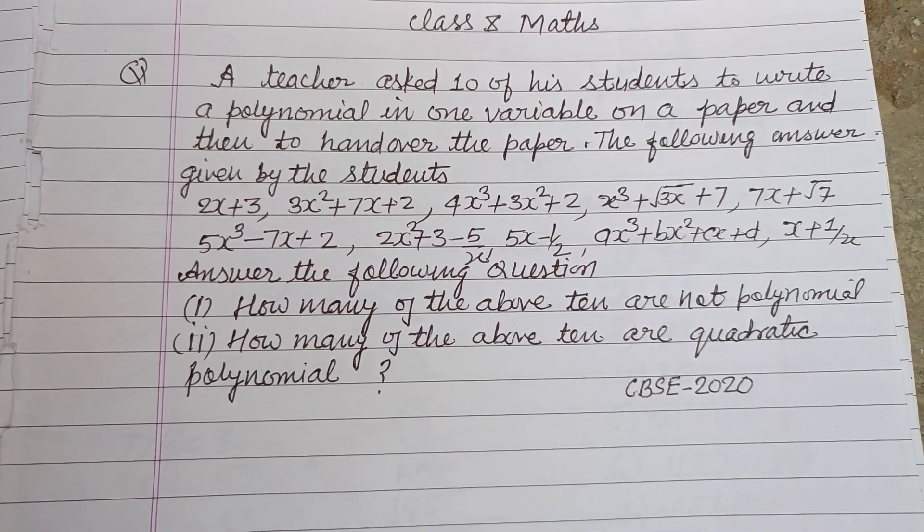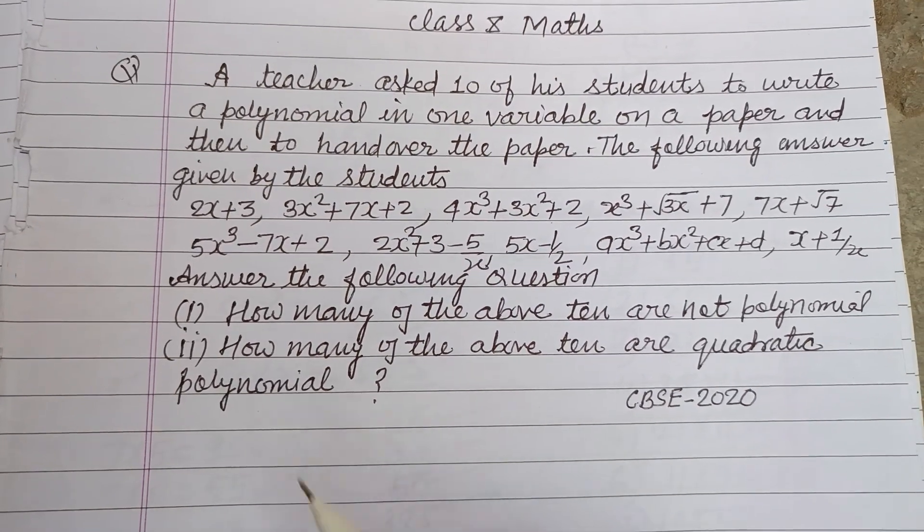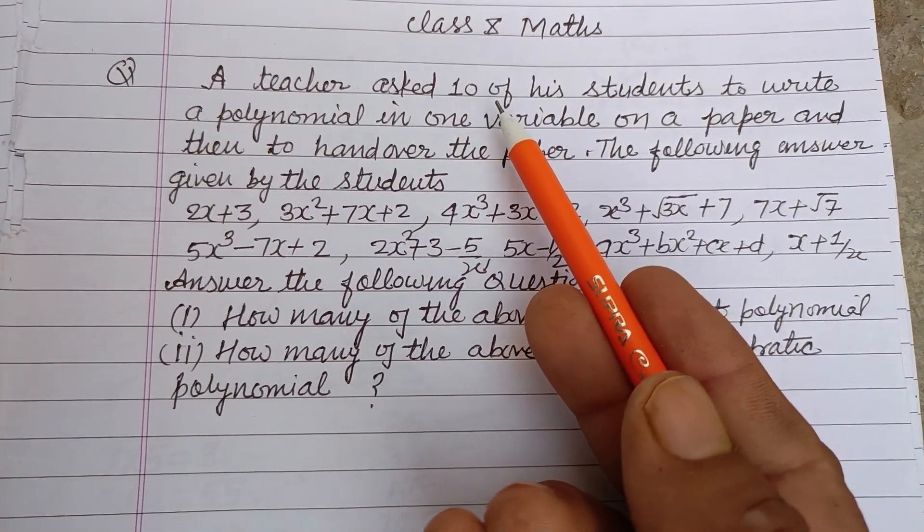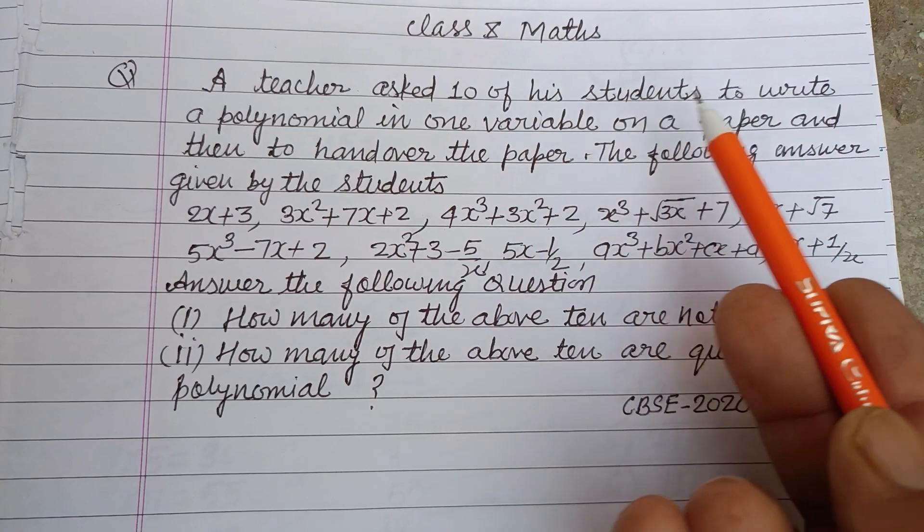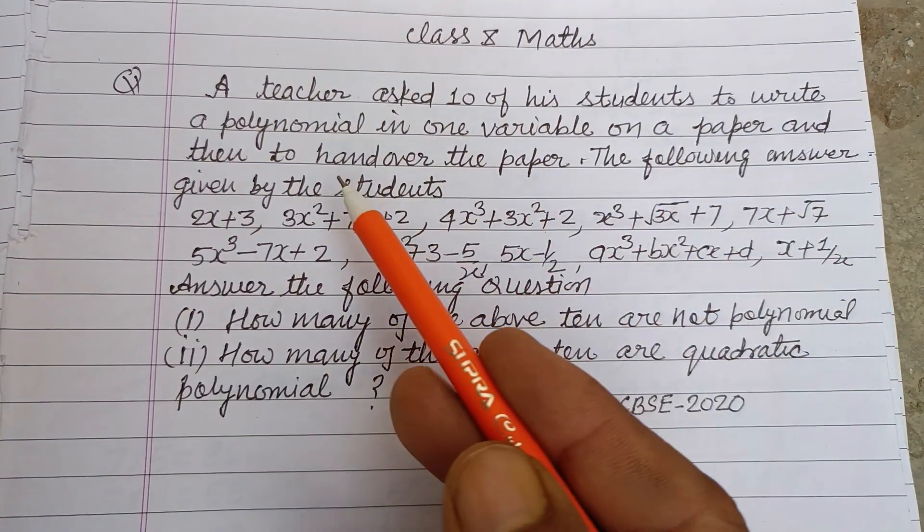Hello viewers, warm welcome to this YouTube channel. This is a question from CBSE Board 2020. A teacher asked 10 of his students to write a polynomial in one variable on a paper and then to hand over the paper.